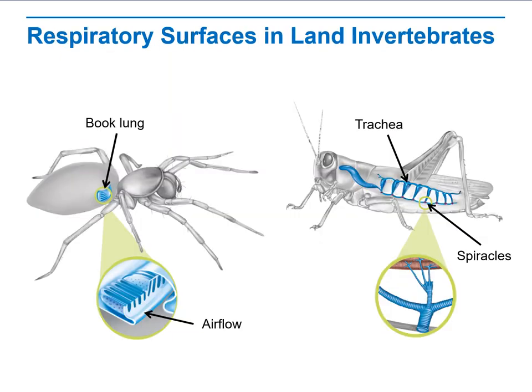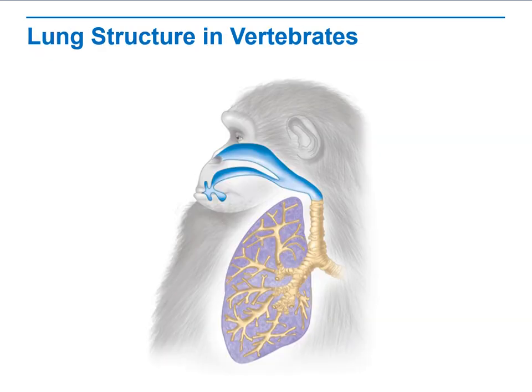Other types of respiratory surfaces exist in land invertebrates. How does air flow go through animals using book lungs or trachea? These are differences among types of animals — for example, between a spider and a grasshopper. Other types of animals, like vertebrates, use lungs as humans do. In the lungs, we have the nasal cavity — the mouth and nose — where air gets into the lungs, traveling through the throat to reach the bronchi and alveoli, where gas exchange happens.